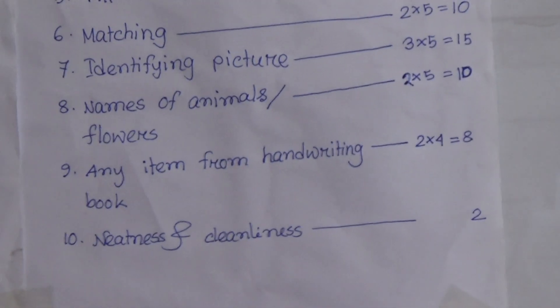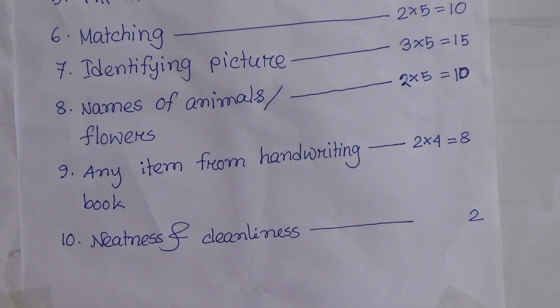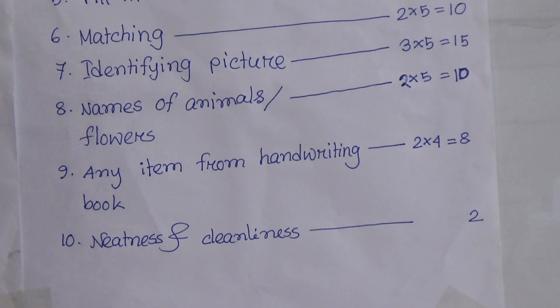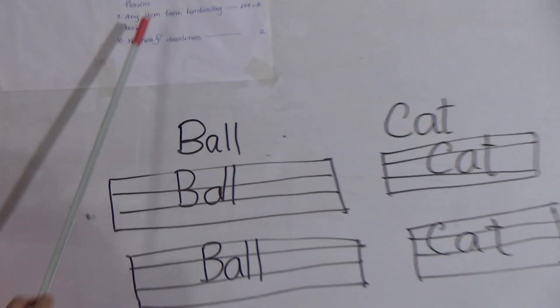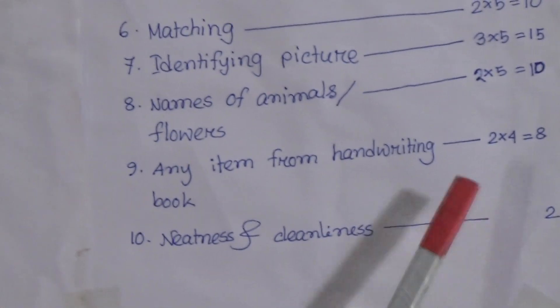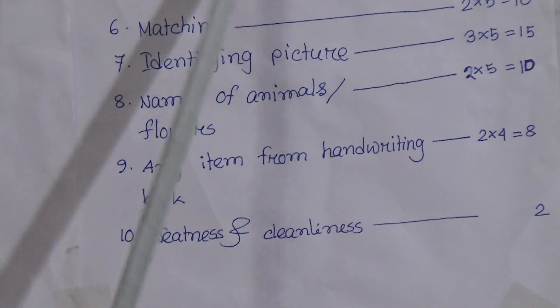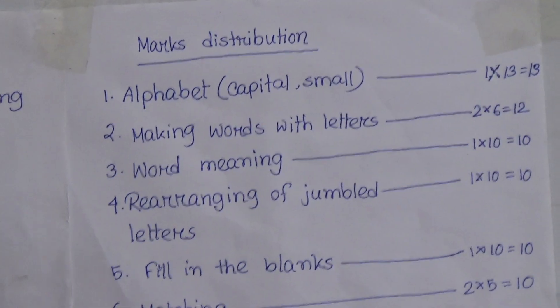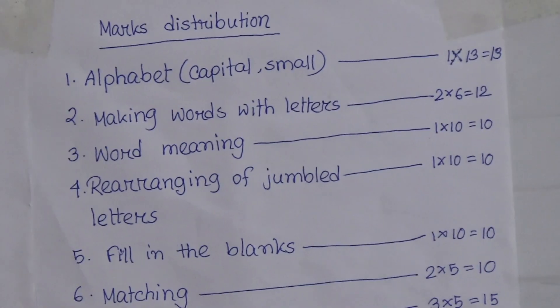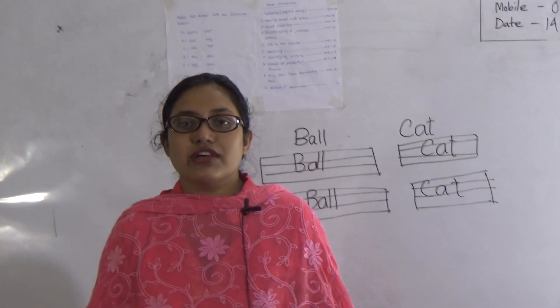This is the way you have to write it — the same thing you have to write two times. The last one is neatness and cleanliness, and you will get 2 marks for this. So this is the marks distribution for nursery. I think you have understood. Students, that's all for today. Stay safe, stay well. I love you.